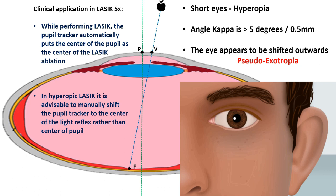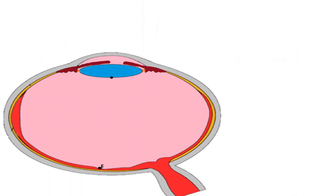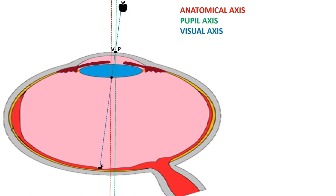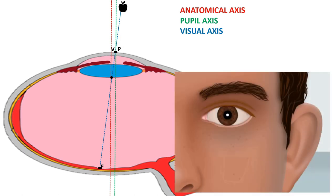Another very important application of angle kappa is in LASIK surgery. While performing LASIK, the pupil tracker automatically puts the center of the pupil as the center of the LASIK ablation. In hyperopic LASIK, it is always advisable to manually shift the pupil tracker to the center of the light reflex rather than the center of the pupil, because of the effect of angle kappa. For completeness, note that in some individuals the pupil itself can be shifted nasally, so point V and point P actually intersect at the same point on the cornea — making angle kappa appear zero on examination, yet having a large angle alpha. An aberrometer is therefore a useful tool to measure both angles accurately.